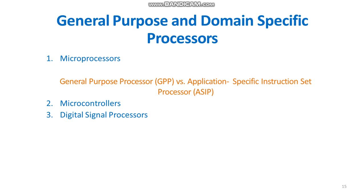A typical digital signal processor incorporates the following key units: program memory — memory for storing the program required by the DSP to process data; data memory — working memory for storing temporary variables, data, or signals to be processed; computational engine — performs signal processing in accordance with the stored program; and I/O unit — acts as an interface between the outside world and the DSP.